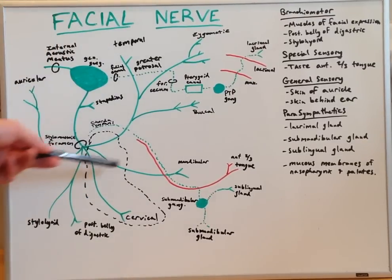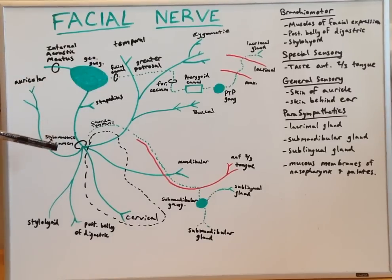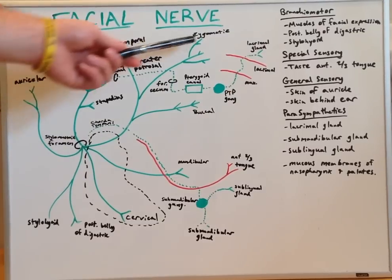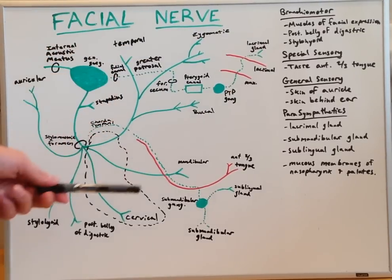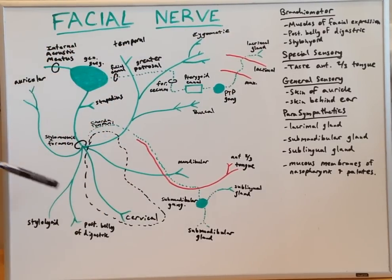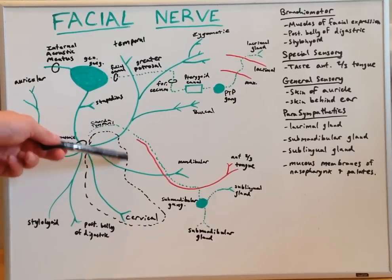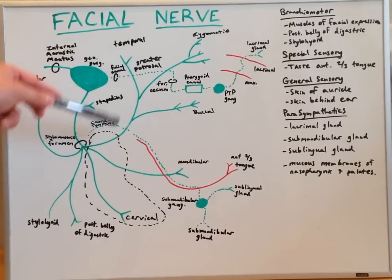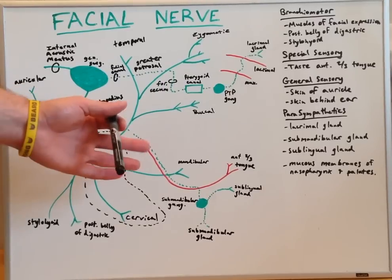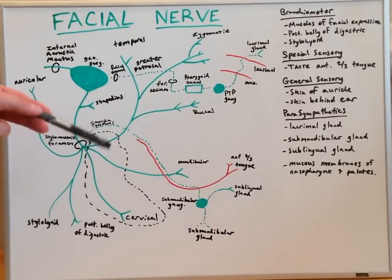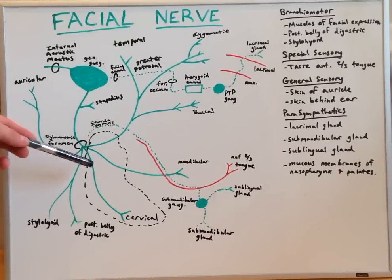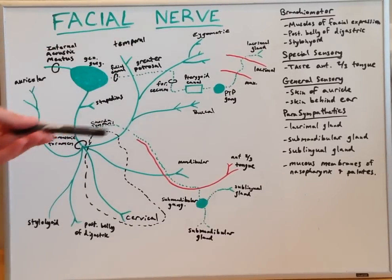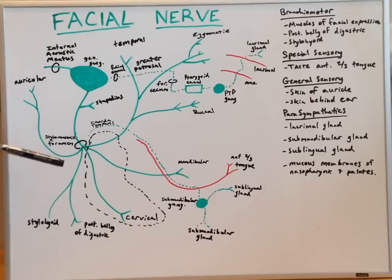Aside from those two, the rest of these branches innervate either skin or the muscles of facial expression — namely zygomatic, temporal, buccal, mandibular, and cervical. These branched nerves pass through the parotid gland but do not innervate it; they merely pass through it as a means to exit through other areas of the face.